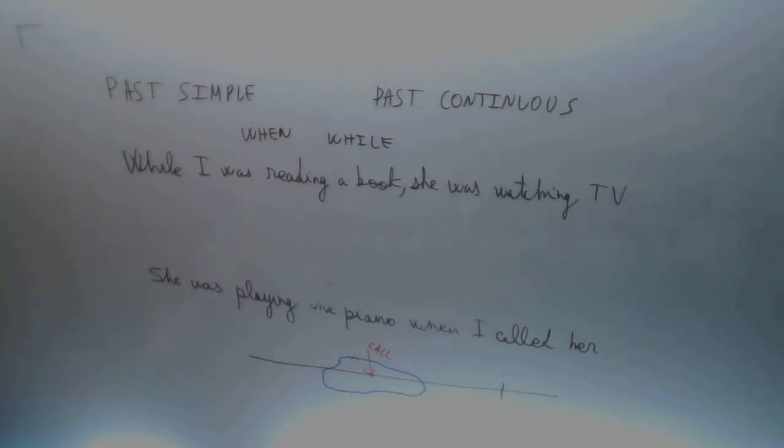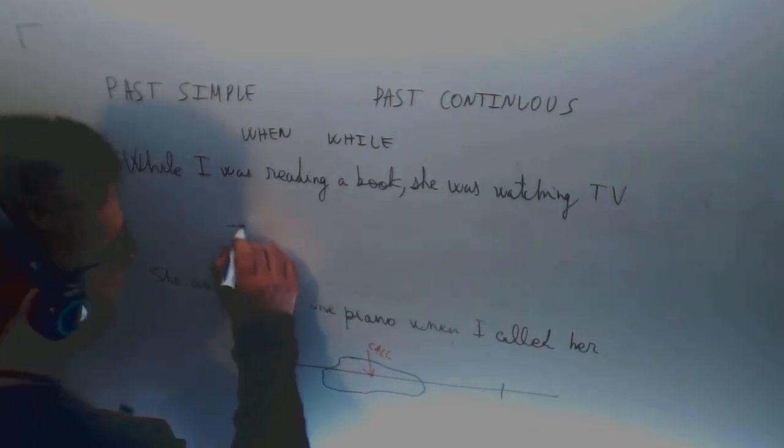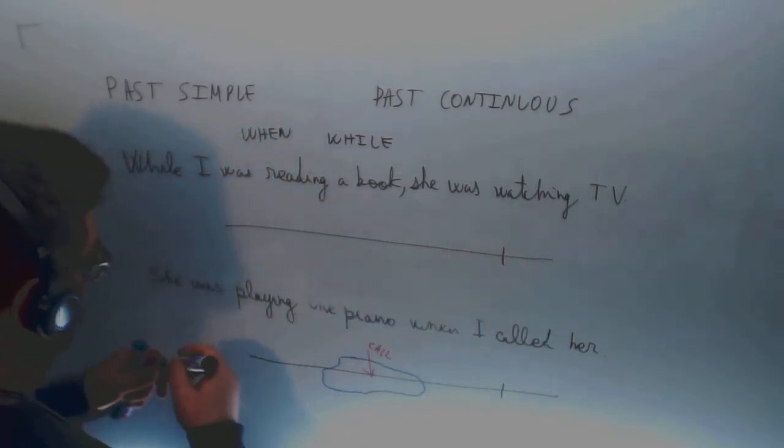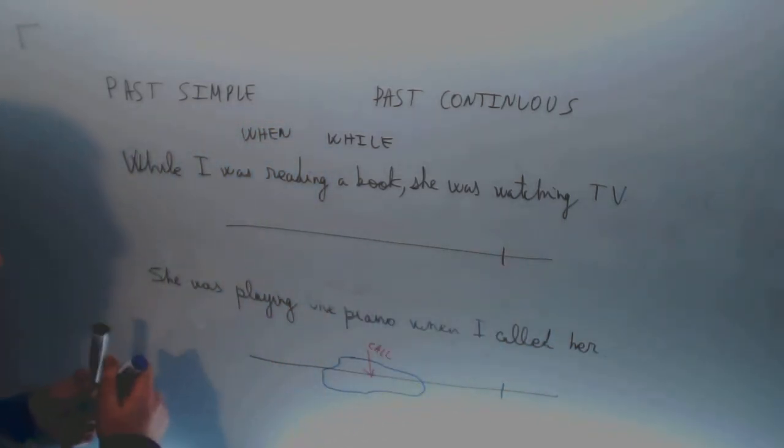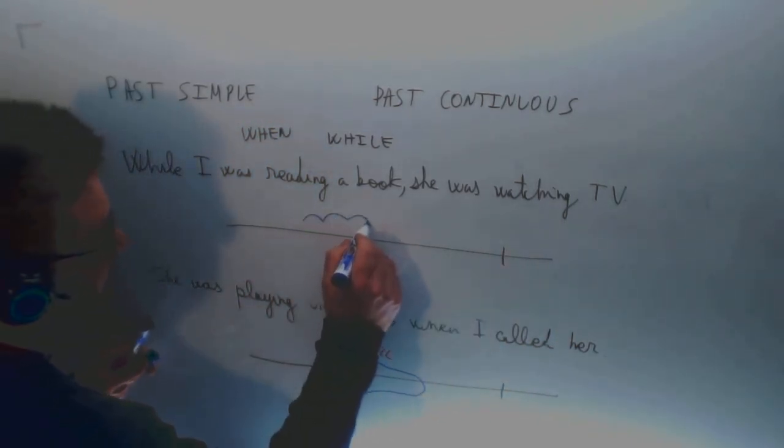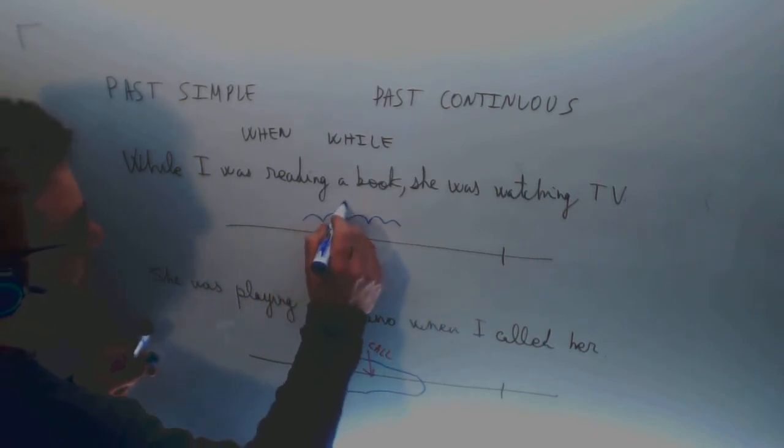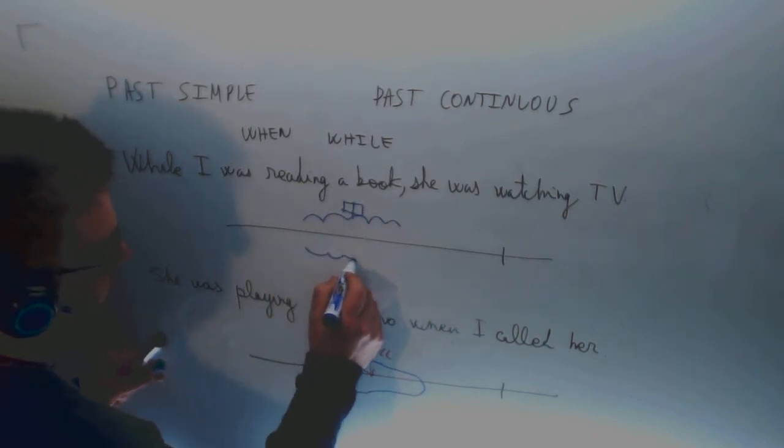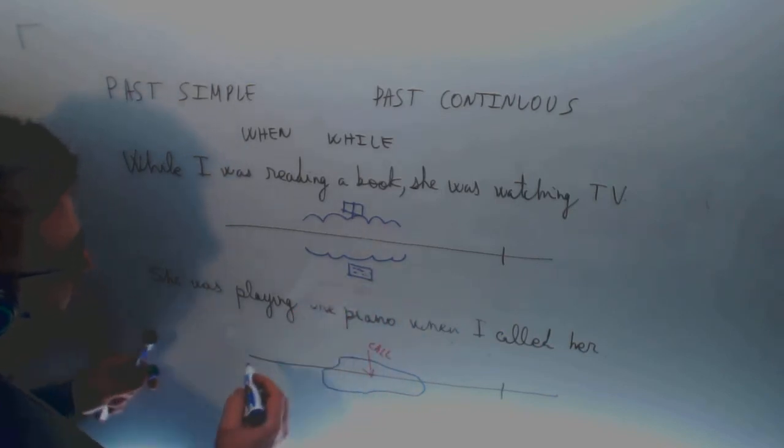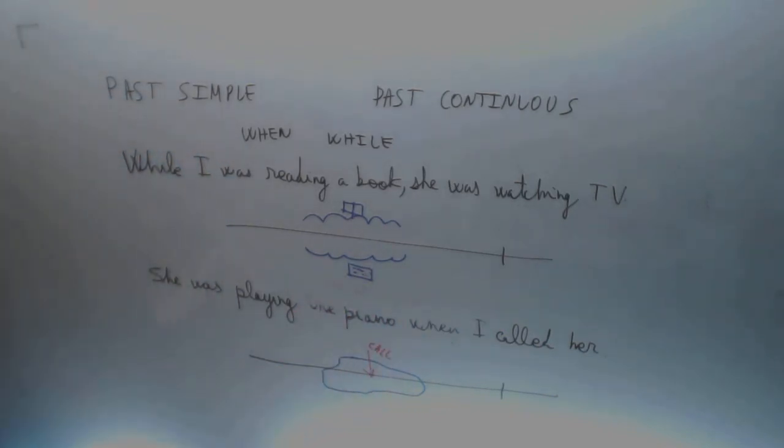The two verbs are in the past continuous form because there are two actions taking place in the past. Read a book, watch TV. And the two actions are happening at the same time, a la vez. And then you use while. Easy enough.